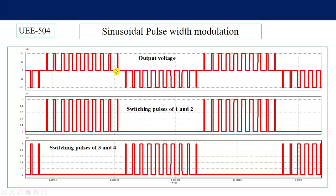A similar process is applied for a three-phase inverter. In the three-phase inverter, the same carrier signal is compared with three reference signals, and those reference signals should be 120 degrees out of phase. Then in three-phase also we can obtain a reduced THD output voltage.